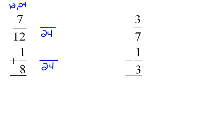Now, let's create those equivalent fractions. 12 times 2 would be 24, so 7 times 2, multiplying by the same thing, would be 14. For the bottom fraction, 8 times 3 would be 24, so multiplying the top by the same thing, 1 times 3 would be 3. And now we can add those equivalent fractions.